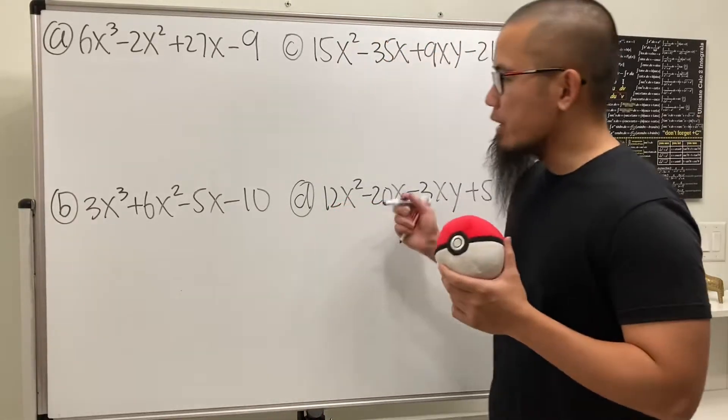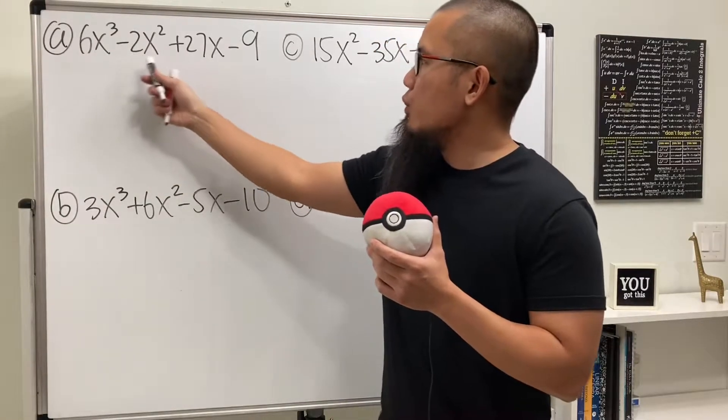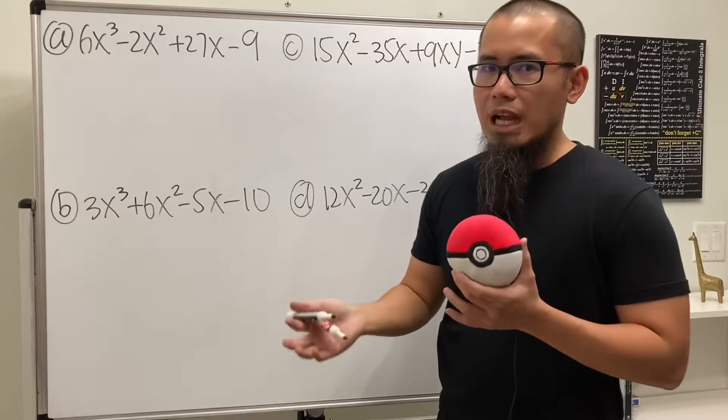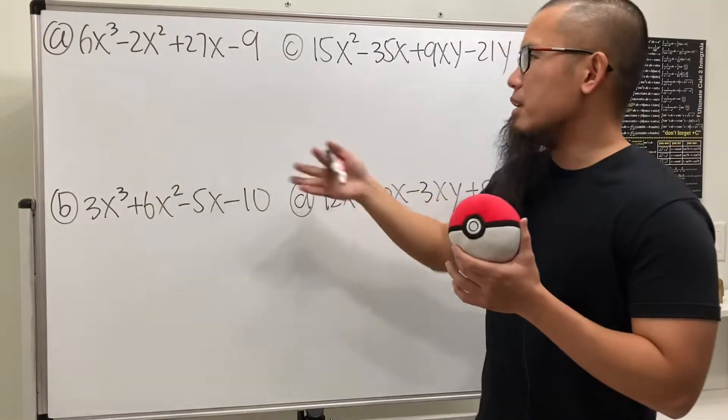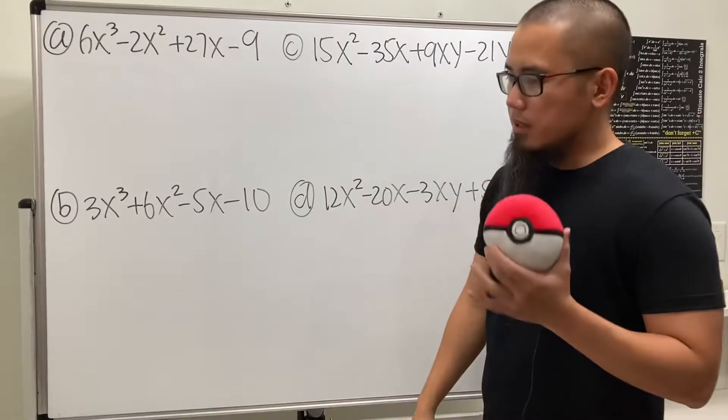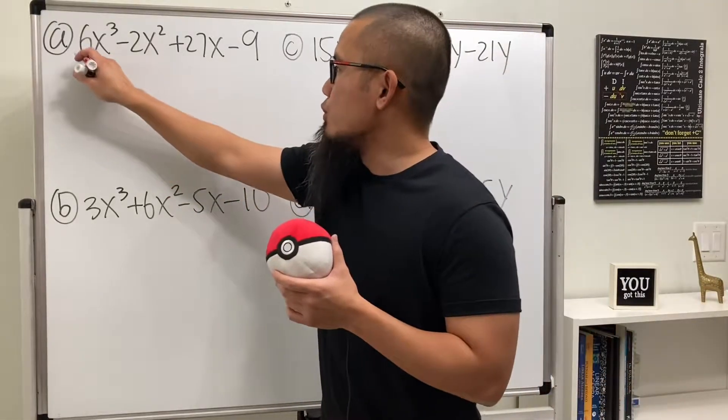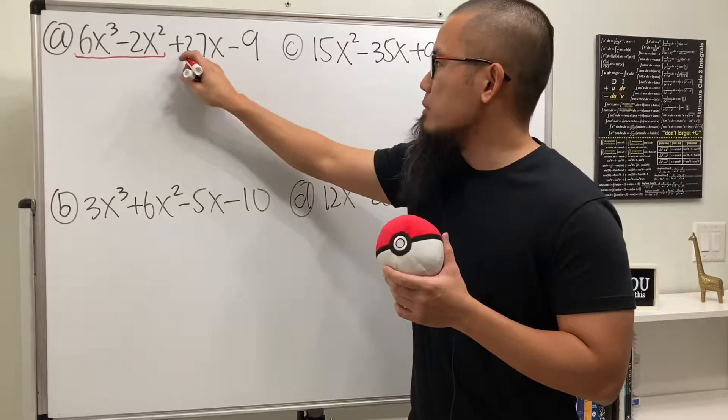So you see that we have four examples, and let's get started with the first one. We'll see that we have 6x³, negative 2x², plus 27x, and then minus 9. Those numbers don't have a common factor, and we cannot factor out any common variable either. So this right here is a good choice to use factor by grouping. And by that, we mean to just break down the expression into the first two terms, and then the last two terms.